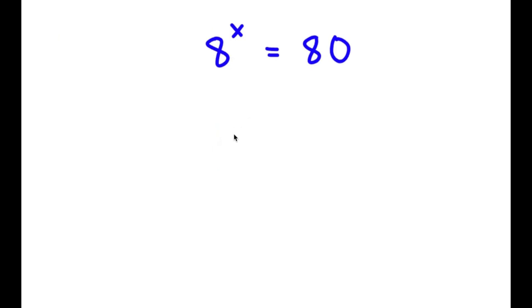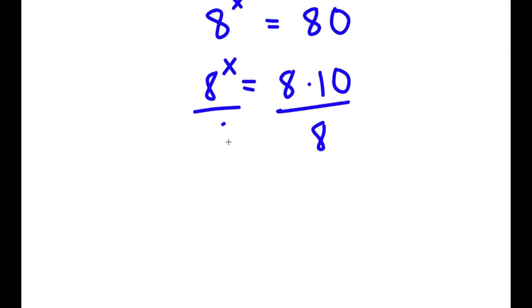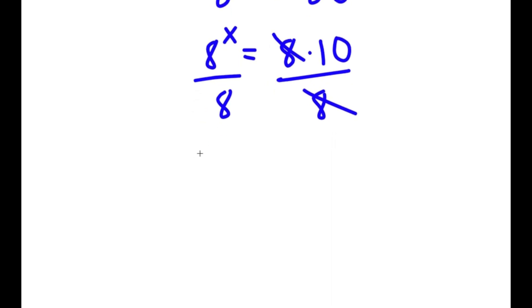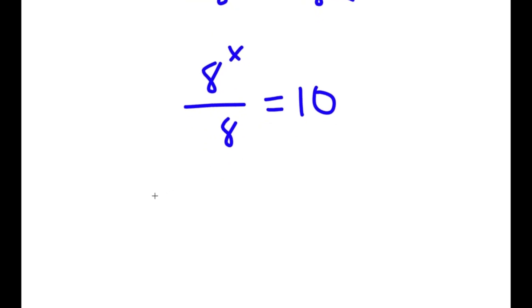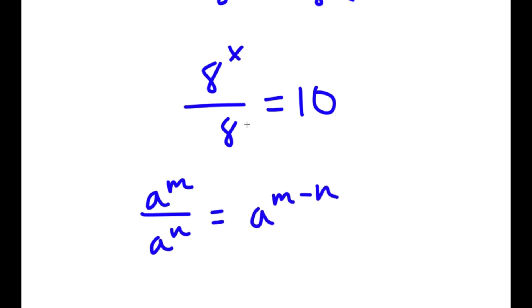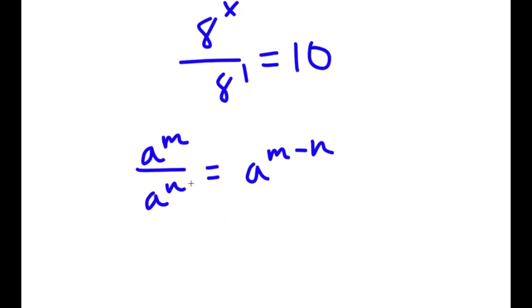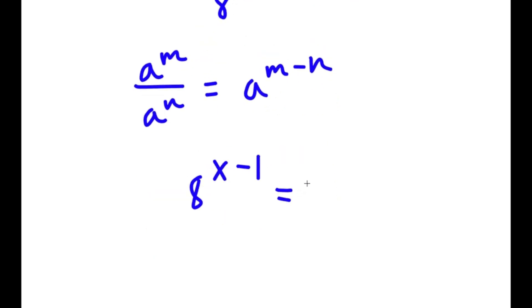In this problem, I have 8 to the power of x is equal to 80. I'm going to rewrite 80 as 8 times 10, so 8^x equals 8 times 10. Dividing both sides by 8, using the rule a^m over a^n equals a^(m minus n), I get 8 to the power of x minus 1 is equal to 10.